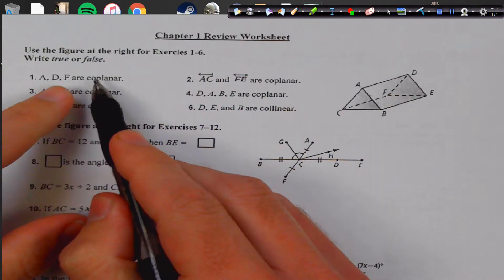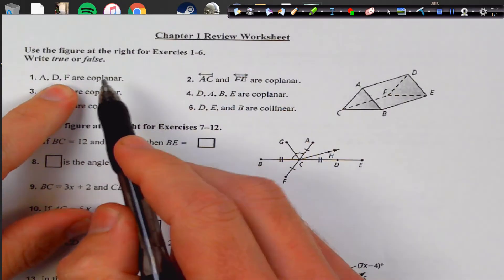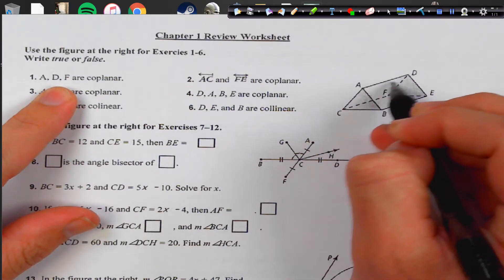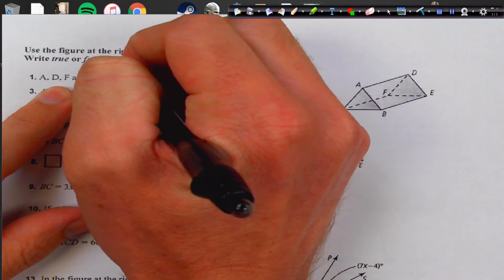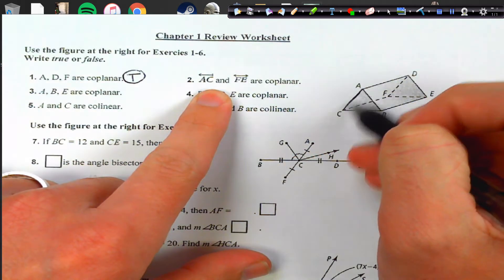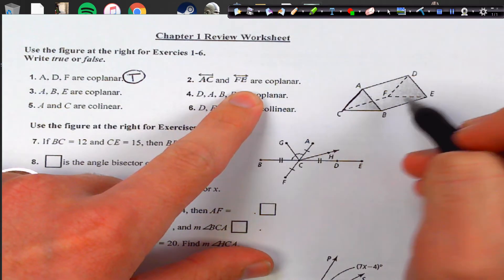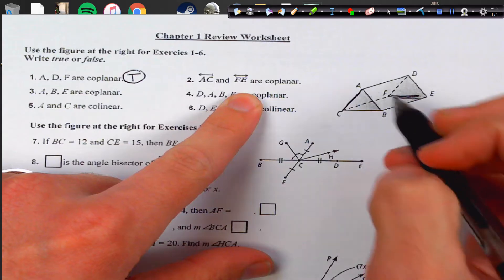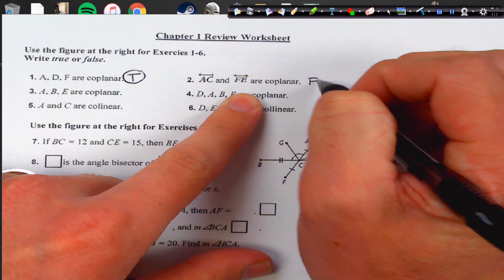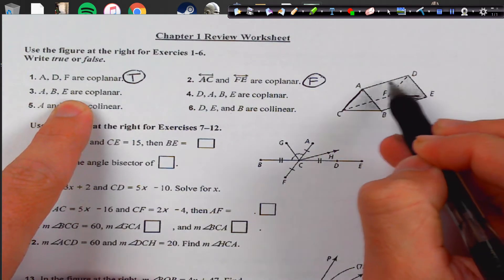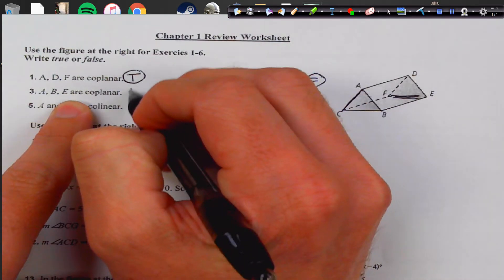A, D, F are coplanar. Coplanar means they're on the same plane. A, D, F actually do exist on this back plane back here, so that is true. Number two, A, C, F, E are on the same plane. Well they're clearly not on the same plane, they're opposite sides from each other so they are not coplanar, false.